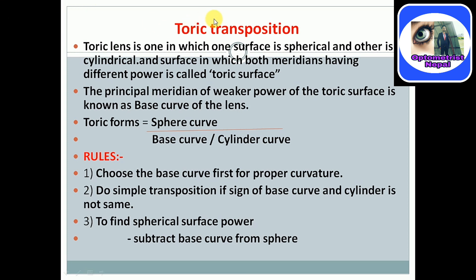Let's discuss toric transposition. What is toric transposition and how should we do it? A toric lens is one in which one surface is spherical and the other is cylindrical. In toric transposition, the toric lens will always be in a surface of sphere and cylinder. Both meridians having different power is called a toric surface. The principal meridian of weaker power of the toric surface is known as the base curve of the lens. Toric form is always written as a fraction — numerator and denominator. In the numerator, we write the spherical curve. In the denominator, we write the base curve and cylindrical curve.